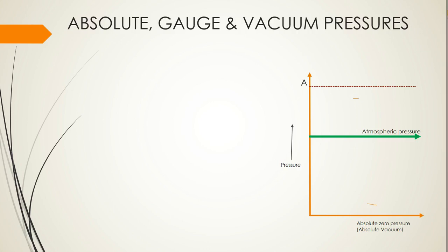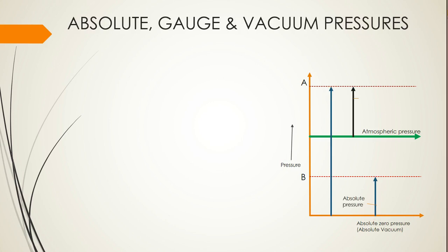I am taking two points: point A, which is above atmospheric pressure, and point B, which is below atmospheric pressure. If I calculate the pressure at point A from the absolute zero line, that is known as absolute pressure. If I calculate it from the atmospheric pressure line, that is known as gauge pressure.